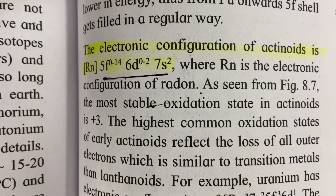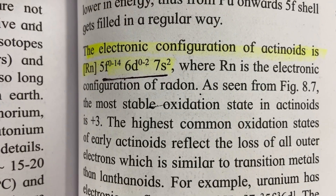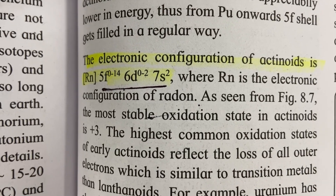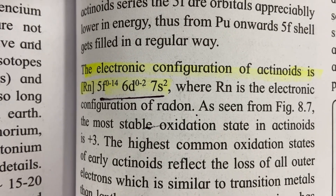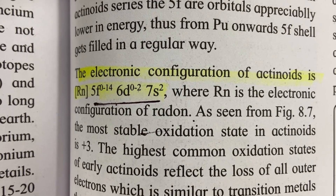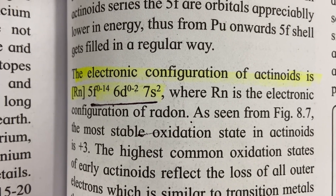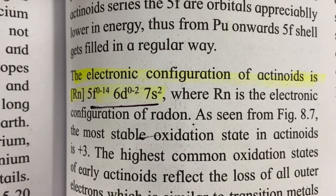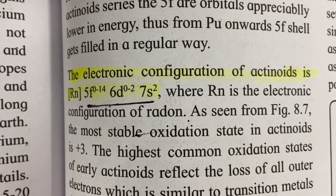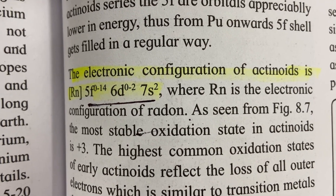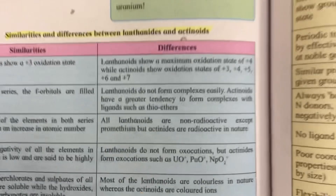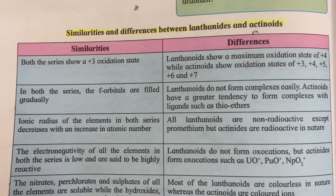The electronic configuration of actinoids is [Rn] 5f⁰⁻¹⁴ 6d⁰⁻² 7s², where [Rn] represents the radon electronic configuration. This is very important to remember.